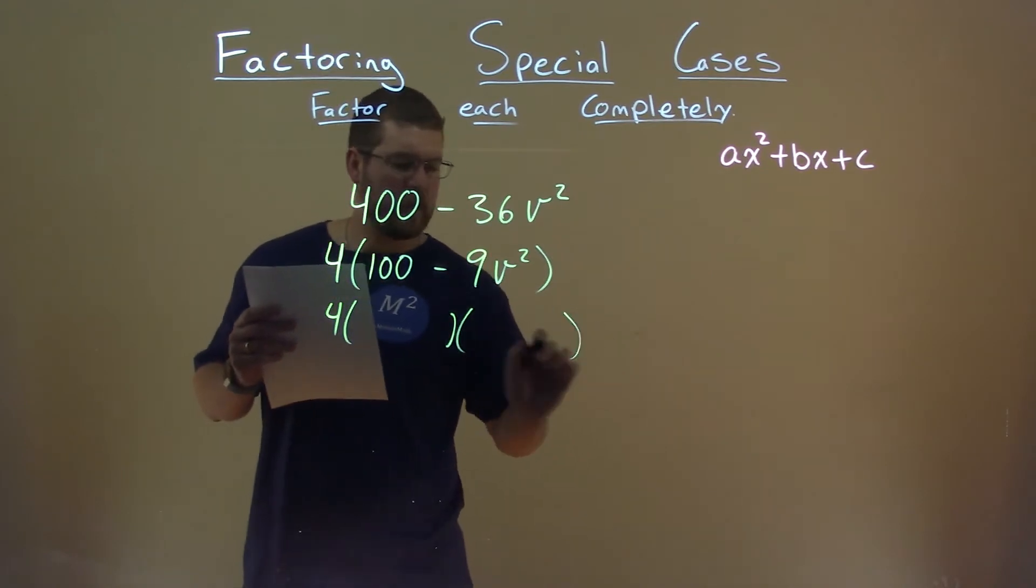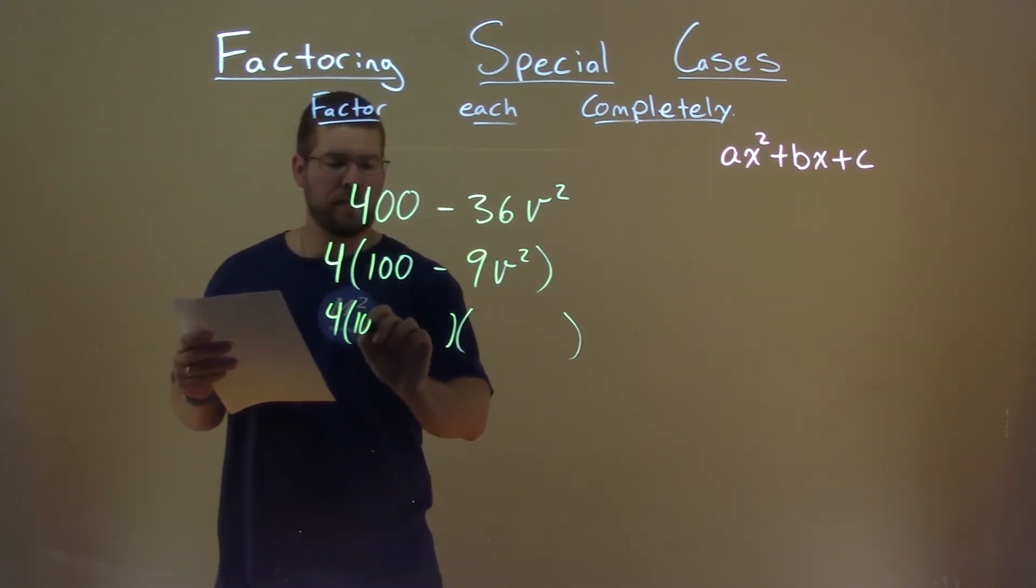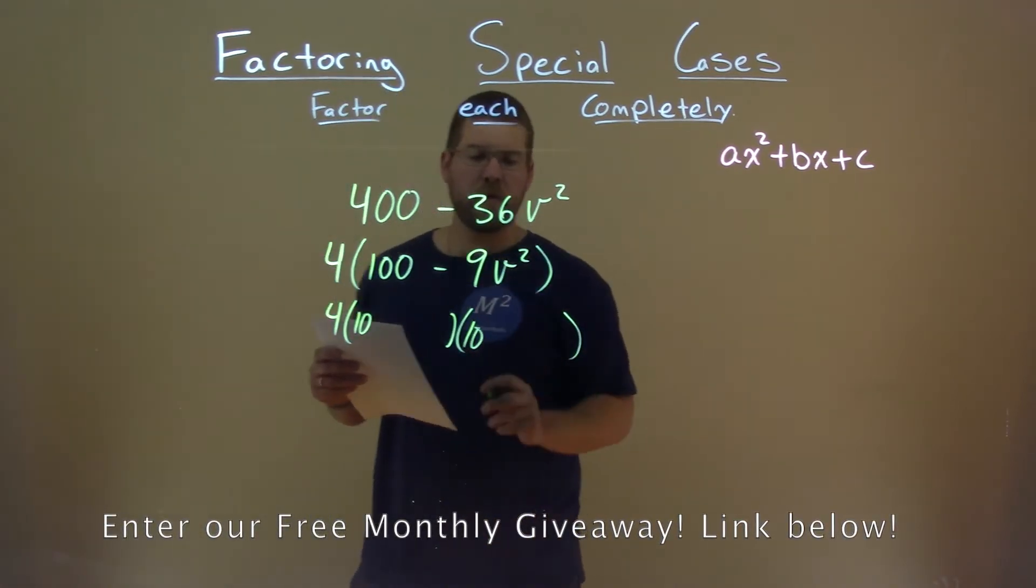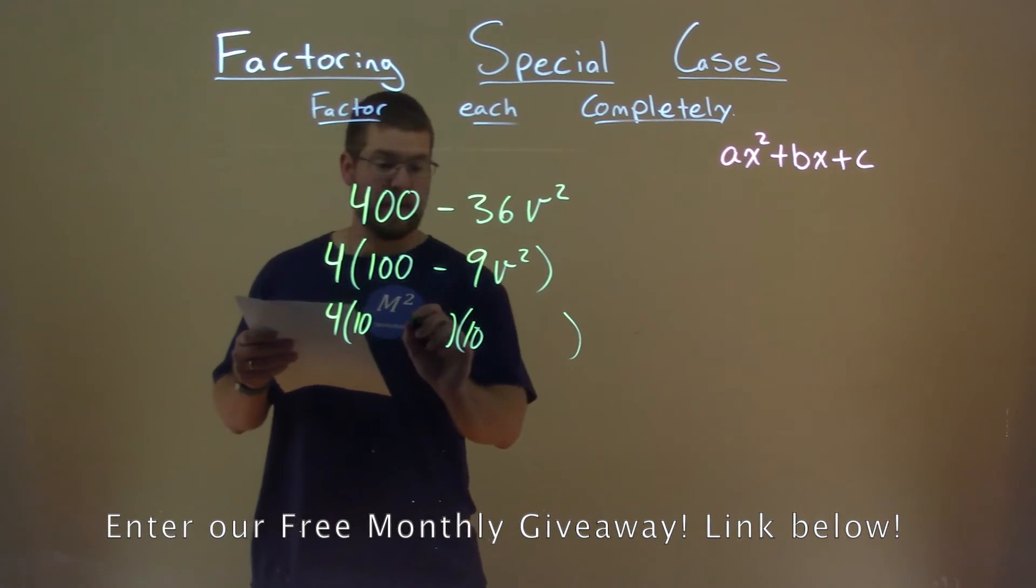We're having some form here of two parentheses. Square root of 100 is 10, so 10 times 10 here is 100. Square root of 9V squared is just 3V.